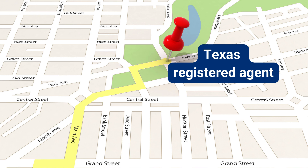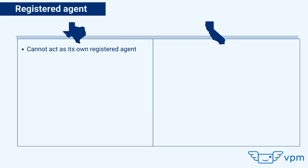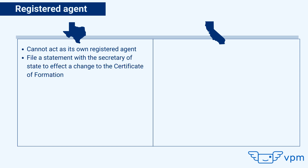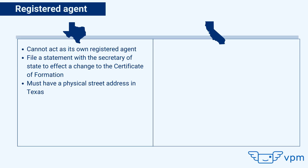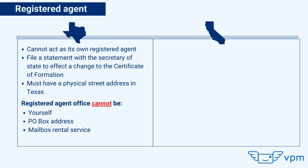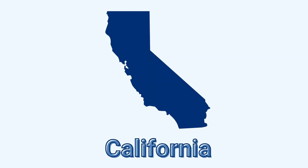Designate a registered agent. In Texas, you only need one address to form a Texas entity: the street address of your registered agent. When you register your company, that address is listed as your place of business in the state's permanent records. Key points: an LLC cannot act as its own registered agent in Texas; you must file a statement with the Secretary of State to change the certificate of formation; failure to maintain a registered agent may result in involuntary termination of the LLC; and the registered agent must have a physical street address in Texas — P.O. boxes, mailbox rentals, or telephone answering services are not accepted.